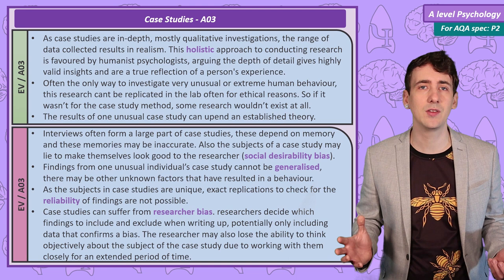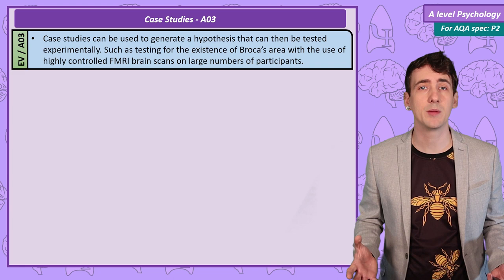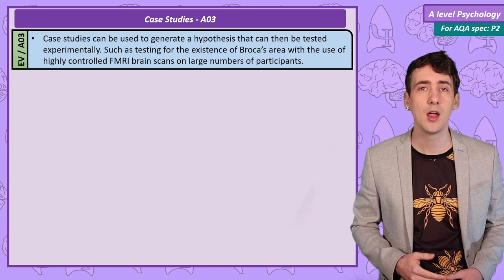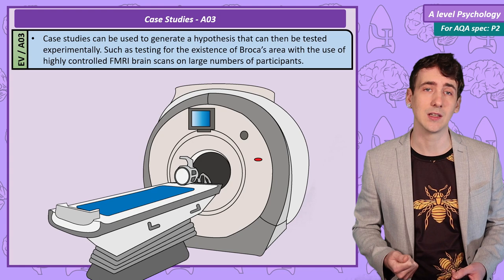While case studies shouldn't be generalised and lack the scientific credibility of experimental methods, they can generate hypotheses that can then be tested empirically and ultimately accepted. Well over 100 years after Broca and Tan's death, we can now use fMRI scans to confirm the existence of the region of the brain associated with speech production.